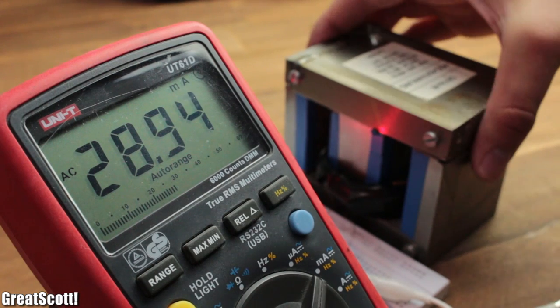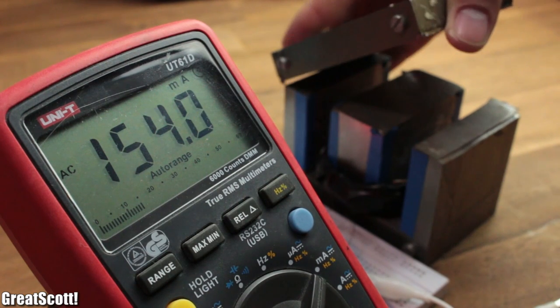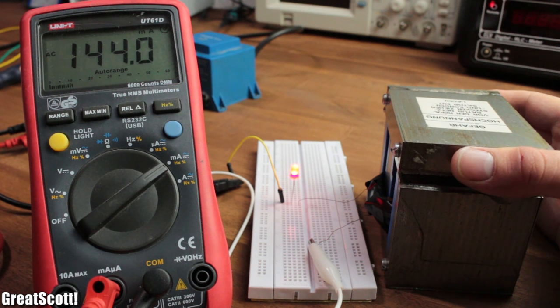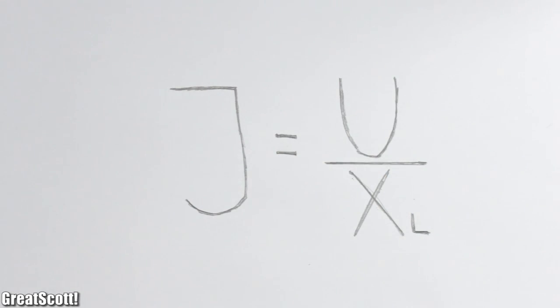We can also see that if I decrease the inductance by opening the iron core, much more current starts to flow rapidly, which means our reactance must have decreased because Ohm's law is still active. Less reactance means more current.